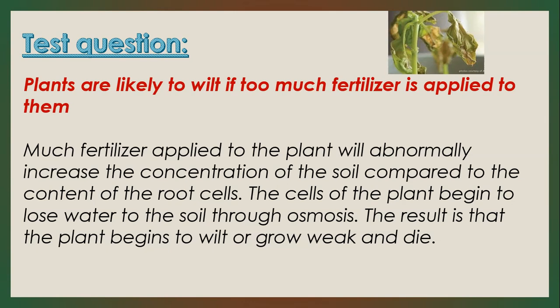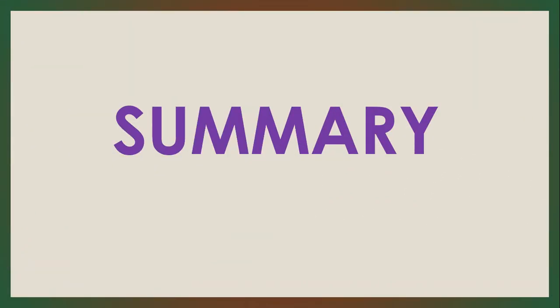You can apply fertilizer to plants, but not too much. This is the end of our lesson. We touched on the applications of osmosis and diffusion and answered a test question from BECE 2019 on why plants are likely to wilt when too much fertilizer is applied to them. Take your time to go through the lesson and do further research to broaden your understanding of diffusion and osmosis. If you have not watched any of the sections of this topic, do your best to find them on YouTube and subscribe to get more videos.